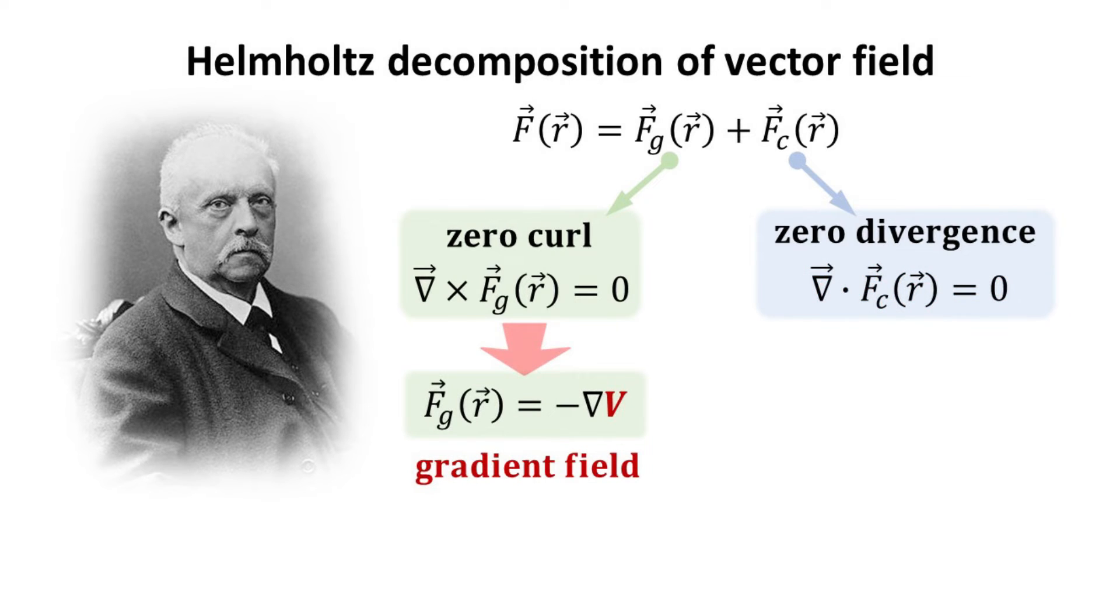F_G can be constructed from the gradient of a scalar field V. Thus, we also call F_G a gradient field. The scalar field V is called the potential.